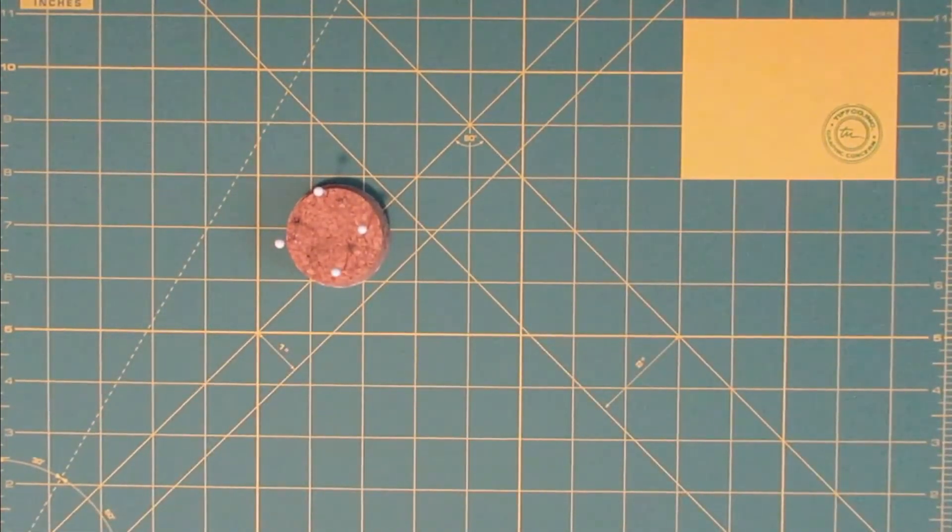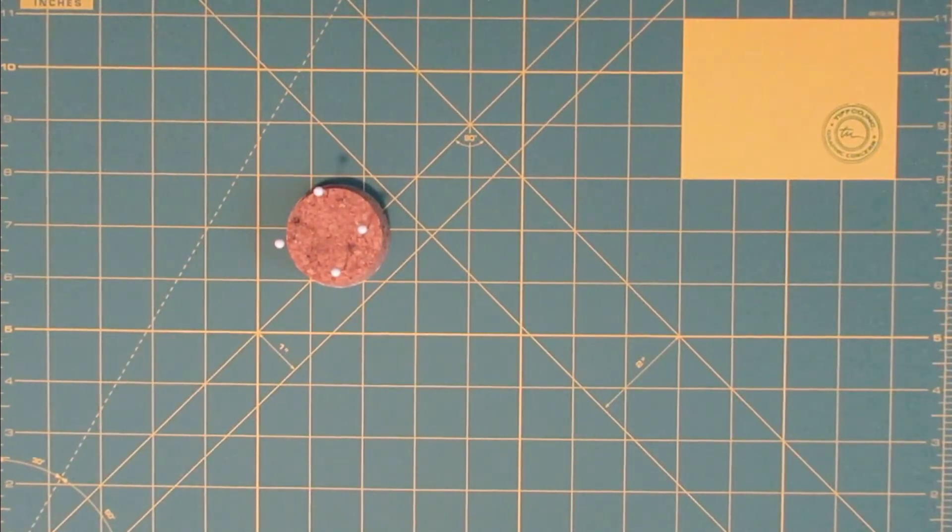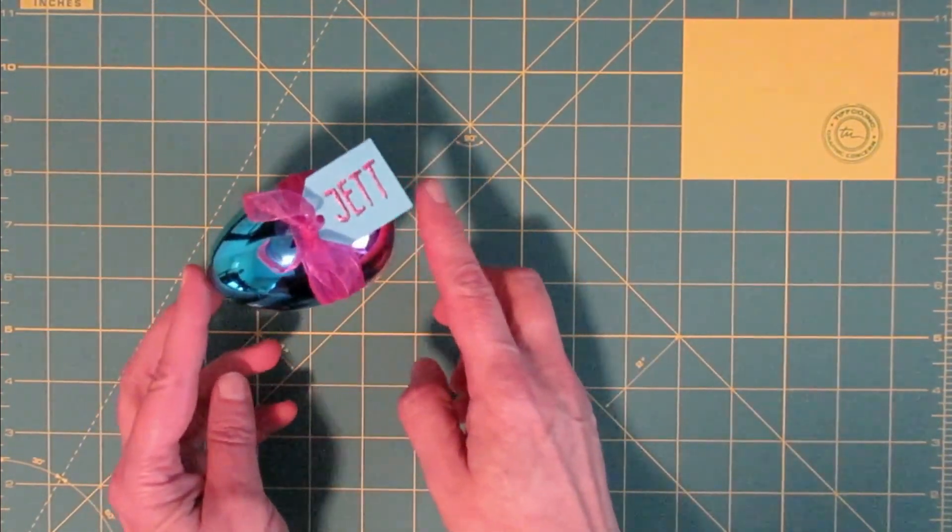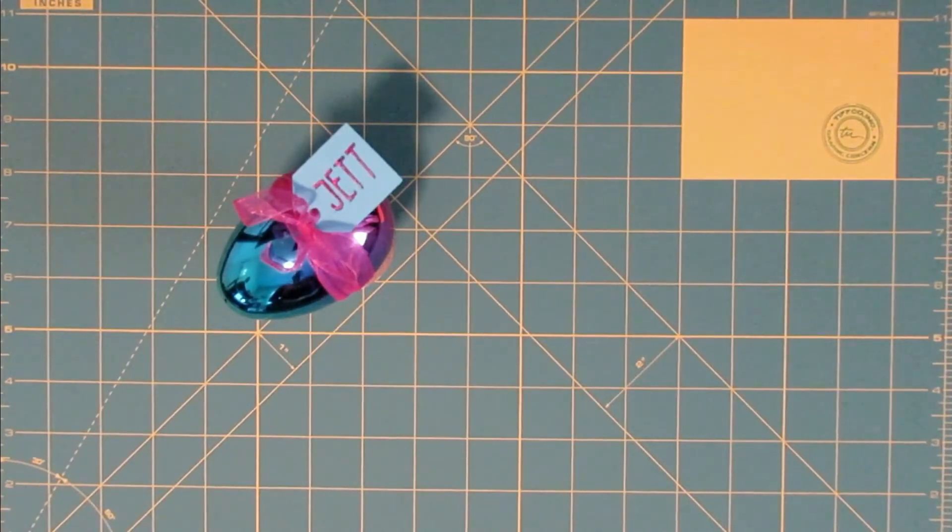I like to tie a ribbon around the outside, maybe add a little tag, and then the person finds a nice surprise when they open the outer egg. Presentation is everything.